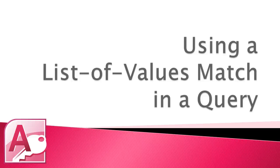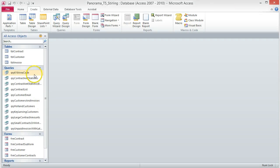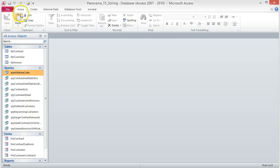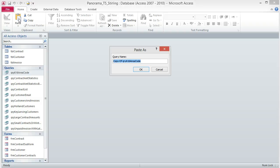Using a list of values match in a query. Next, we're going to create a query using the IN comparison operator. This allows you to define a condition with a list of two or more values for a field. If a record's value matches any value from the list, the record is displayed in your results. For example, in this query we want to see customers who live in Holland, Rockford, or Sagatek. To begin, create a copy of the 616 area code query — you can do this from the backstage view or by right-clicking and choosing Copy. When you paste it, change the name to QRY Holland, Rockford, Sagatek Customers.